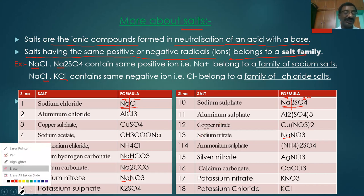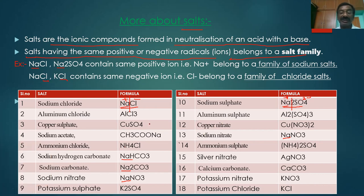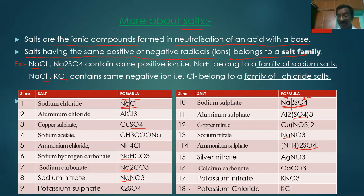Similarly, if you take the sulphate family: Copper Sulphate has the sulphate negative ion, Sodium Sulphate has the sulphate negative radical, Aluminium Sulphate has the sulphate radical, and Ammonium Sulphate also has sulphate. So the sulphate family includes Copper Sulphate, Sodium Sulphate, Ammonium Sulphate, and also Potassium Sulphate.